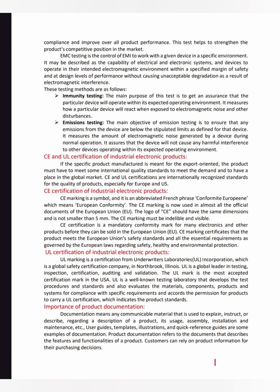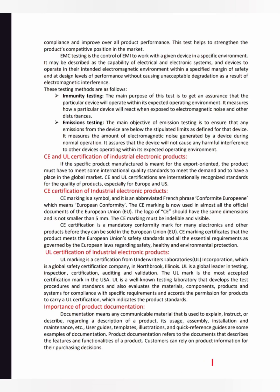In the UL testing process, materials, components, and products are evaluated against specific safety requirements and standards. Once correct safety measurements are confirmed, UL certification is granted. UL certification falls into three main categories: UL Listed, UL Certified, and UL Classified.